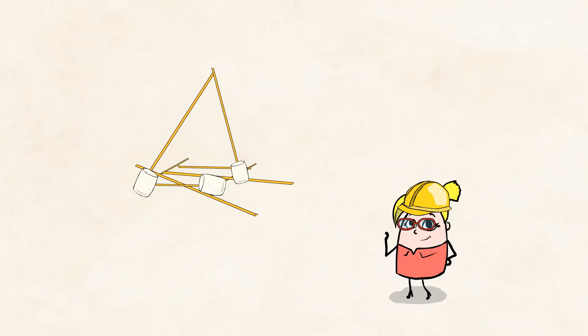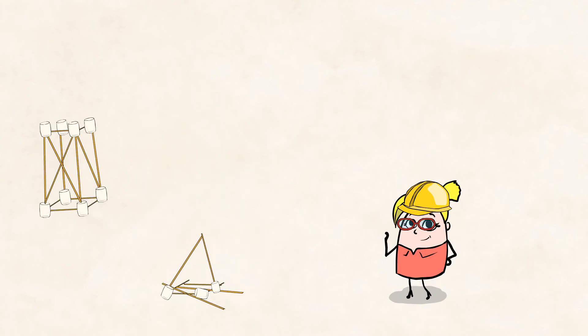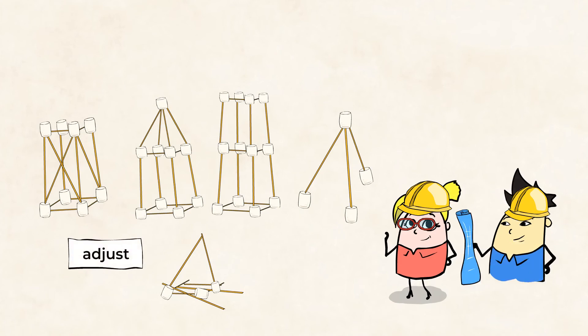If it falls apart, try a different design, or try using different materials. You may need to adjust and rebuild several times before you come up with a building that can withstand an earthquake. And that's okay. Engineers most certainly need to do that.